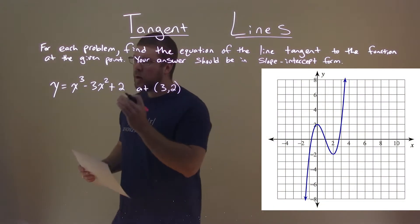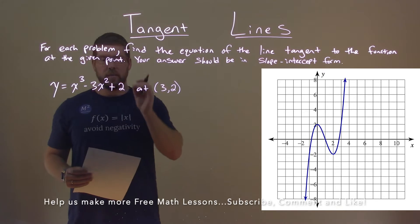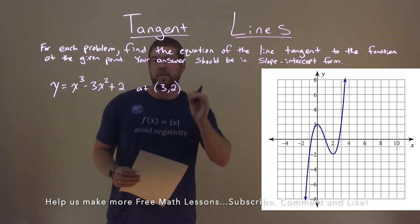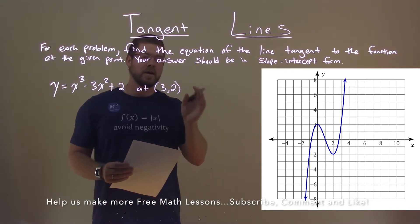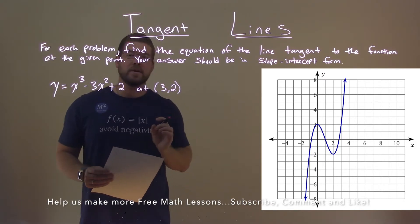We're given this problem: y equals x to the third power minus 3x squared plus 2, and we need to find the equation of the line tangent to the function at 3 comma 2.